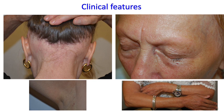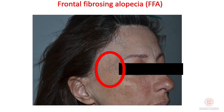It is frequent to have involvement of the eyebrows and, less commonly, the eyelashes. Rarely, body hair — for example on the arms — can also be affected. Another clinical feature is the presence of facial papules, which is very typical and important because it usually appears in the early form of FFA.